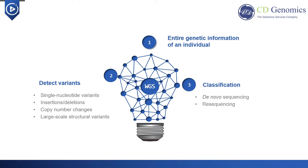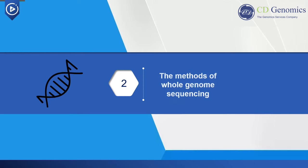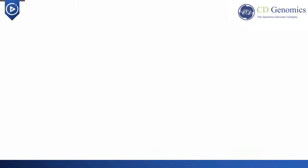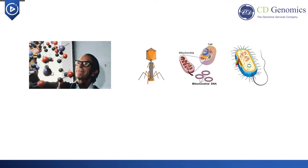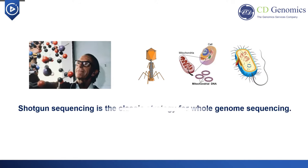If there is a reference genome, genome assembly will become easy and rapid. Next, you will learn the methods of whole genome sequencing. In the early 80s, Sanger successfully completed the whole genome sequencing of the lambda phage using the shotgun method, and the method was successfully applied to larger viral DNA, organelle DNA, and bacterial genomes. Shotgun sequencing is the classic strategy for whole genome sequencing.